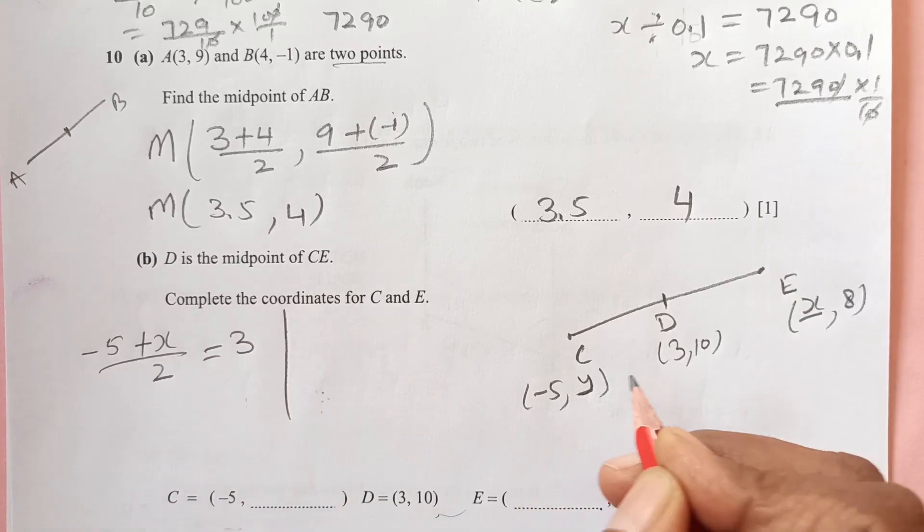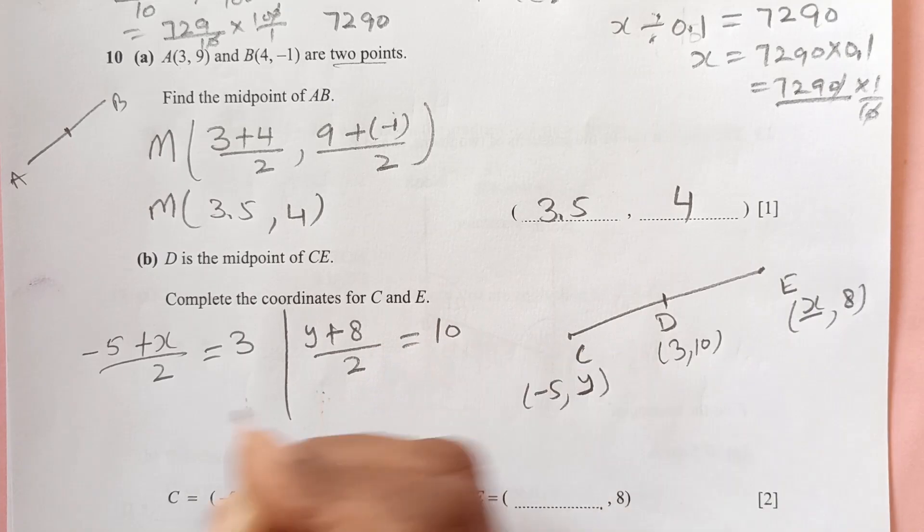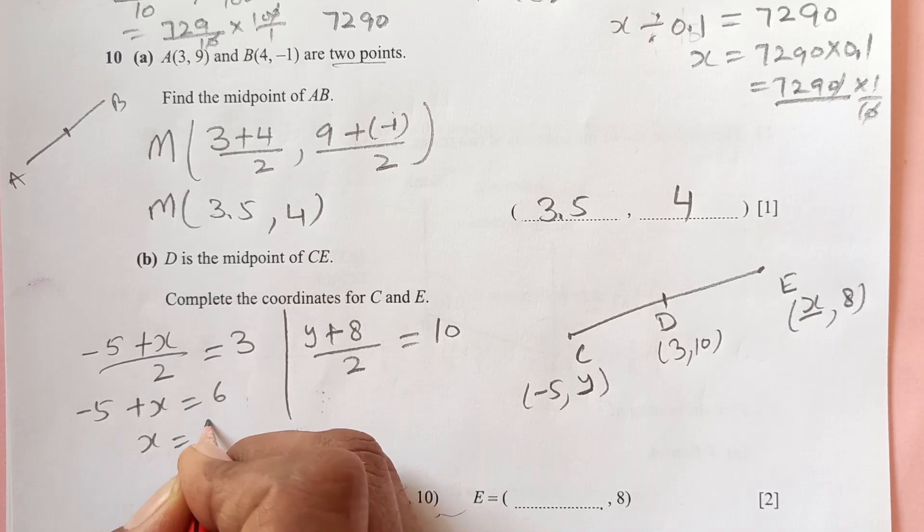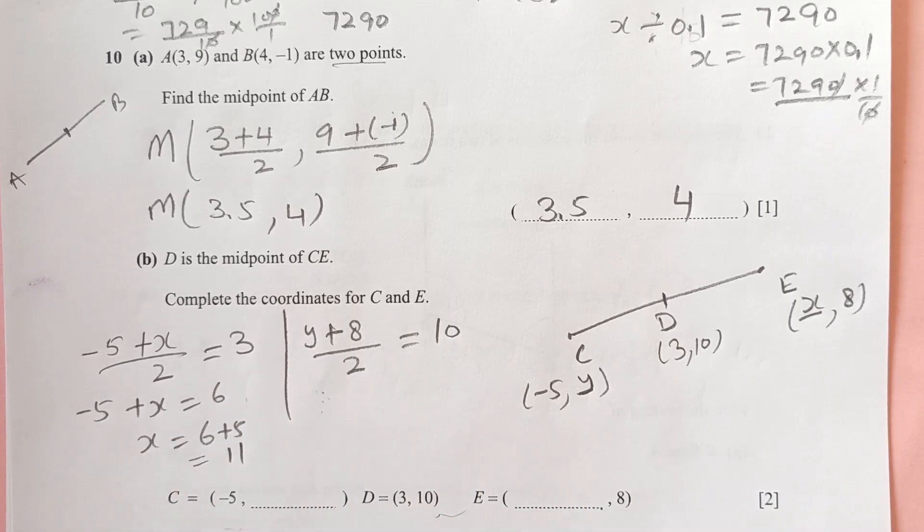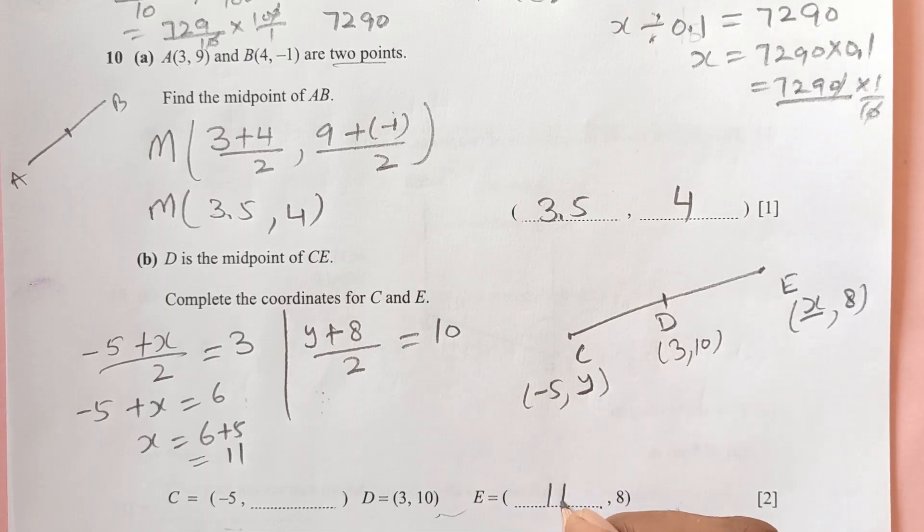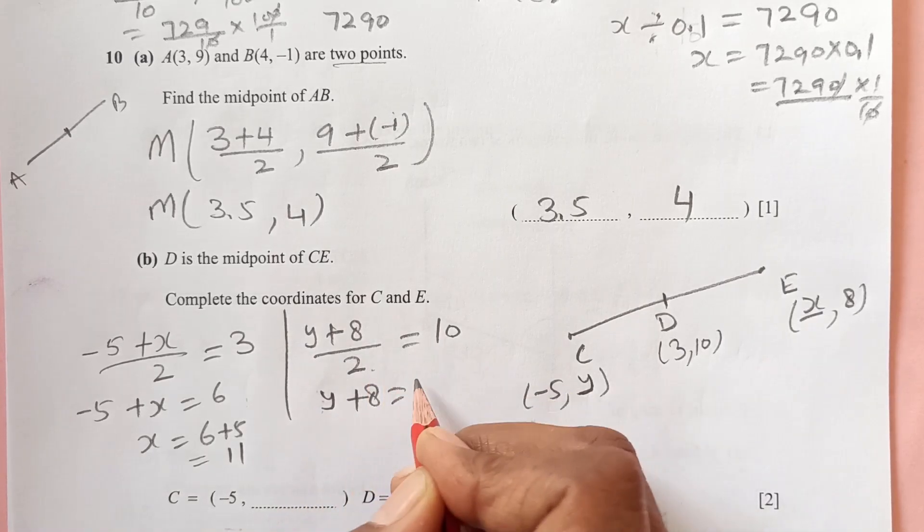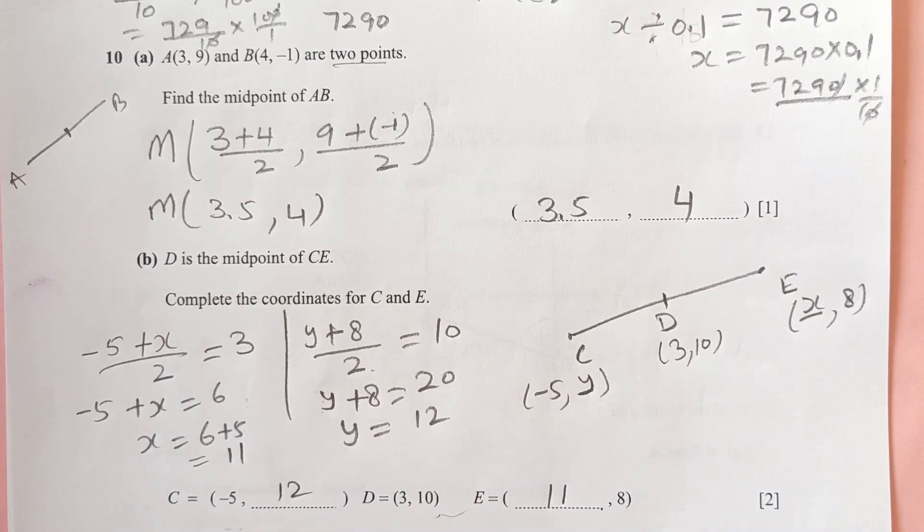How we get midpoint: negative 5 plus x over 2 equals 3, and y plus 8 over 2 equals 10. So negative 5 plus x equals 6, and x equals 6 plus 5, it's 11. So we got x as 11, so this is going to be 11 here. And the other one, y plus 8 equals 10 times 2 is 20, so y is 20 minus 8, that is 12.